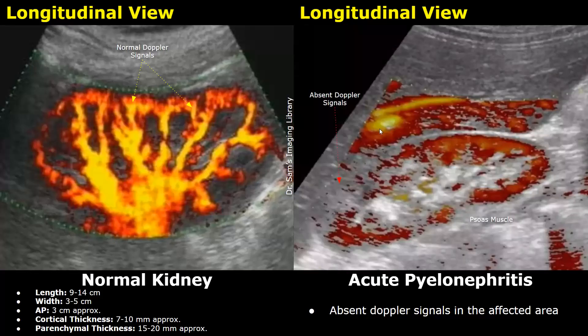This is another case of acute pyelonephritis where the upper pole of the kidney was affected, and you can see absence of power Doppler signals in that region.